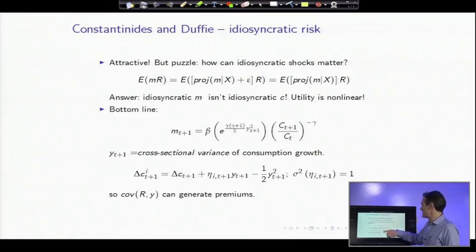Here's the model. Individual i's consumption growth is aggregate consumption growth times an individual i shock multiplied by Y. And therefore, when Y is higher, the idiosyncratic variance is higher.